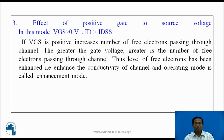Effect of positive gate-to-source voltage: in this mode VGS is greater than 0 and ID is greater than maximum current. If VGS is positive, it encourages the number of free electrons passing through the channel. The greater the gate voltage, the greater the number of free electrons passing through the channel. Thus the level of free electrons is enhanced, i.e., the conductivity of the channel is enhanced, and this operating mode is called the enhancement mode. When VGS is positive, the MOSFET operates in enhancement mode.